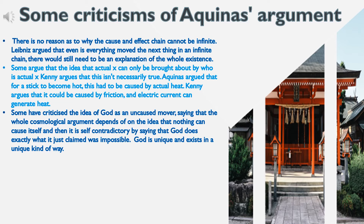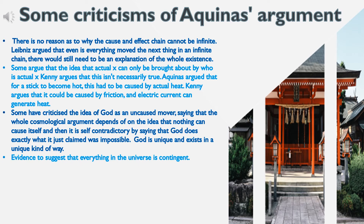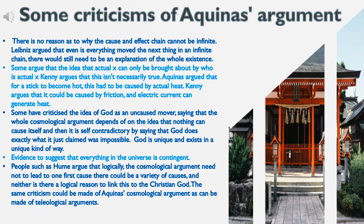God is unique and exists in a unique kind of way. There is evidence to suggest everything in the universe is contingent. People such as Hume argue that logically, the cosmological argument need not lead to one first cause — there could be a variety of causes — and neither is there a logical reason to link this to the Christian God. The same criticism could be made of Aquinas's cosmological argument as can be made of teleological arguments.